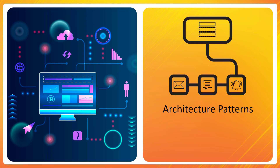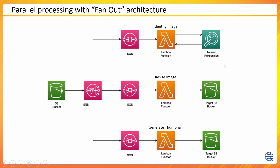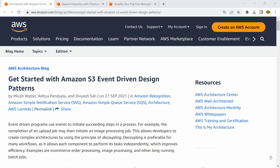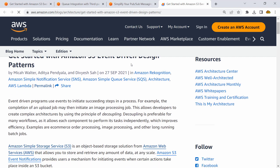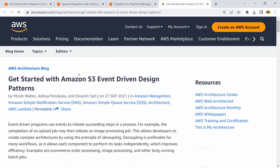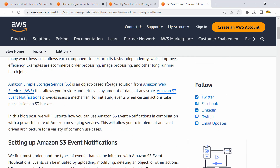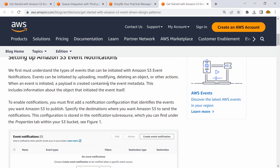The first one I'm taking here is from a blog post — I'll include the link for all of these. This is a parallel processing with fan-out architecture. Let me go to that blog and explain the concept. This blog talks about getting started with Amazon S3 event-driven architecture.